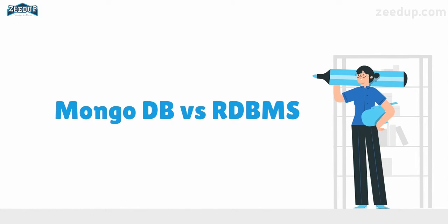MongoDB is a new and popularly used database. It is a document-based, non-relational database. It is claimed to be a hundred times faster than the traditional database, but it is still early to say that it will completely replace the relational database management system. It is useful in terms of performance, speed, and scalability.